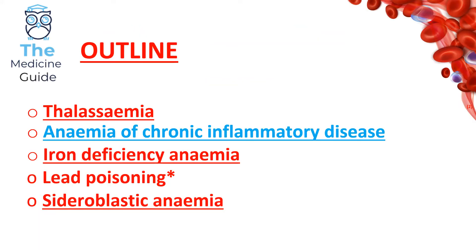Today's video is focusing upon microcytic anaemia. Microcytic anaemia presents on a full blood count with a low haemoglobin value and a low MCV. The causes of microcytic anaemia are as follows: thalassemia, anaemia of chronic inflammatory disease, iron deficiency anaemia, lead poisoning, and sideroblastic anaemia. All of these diseases will be covered in today's video.